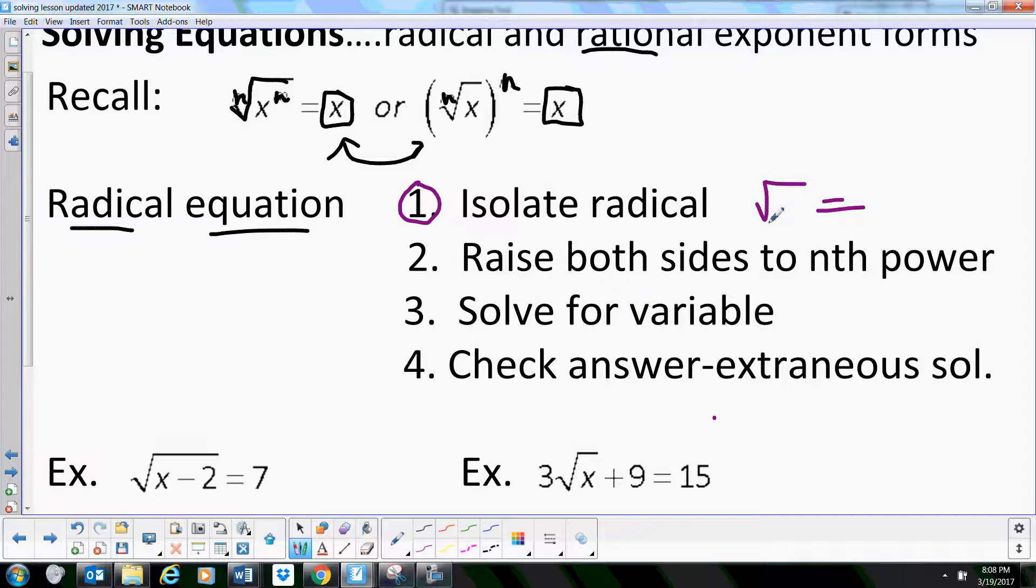Then you want to look at the power. If it's a square root, the nth power we're going to raise it to is two, or if it's a cube root, we'll raise it to the third. Look at the nth power and raise both sides of the equation to that power. That gets rid of your radicals in most cases.